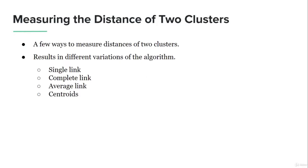How do we decide which clusters are close enough to be merged together? There are different distance techniques that can be used. We will study a few of them: single link, complete link, average link, and centroid — these are different variations of distance measuring algorithms.